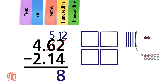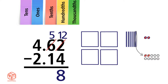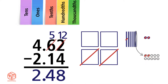Now subtract the tenths. 5 minus 1 equals 4, so we write that in the tenths column and we bring down the decimal point. Now subtract the ones. 4 minus 2 equals 2. So the answer is 2.48.